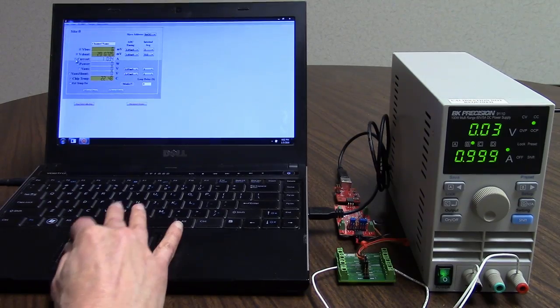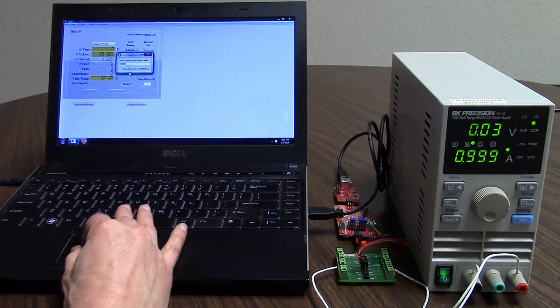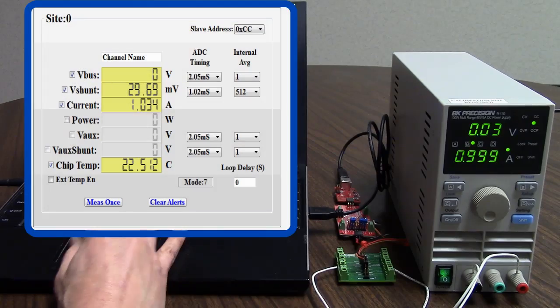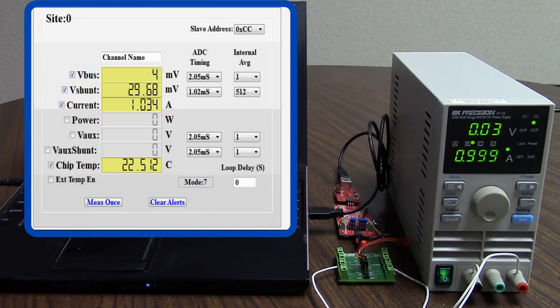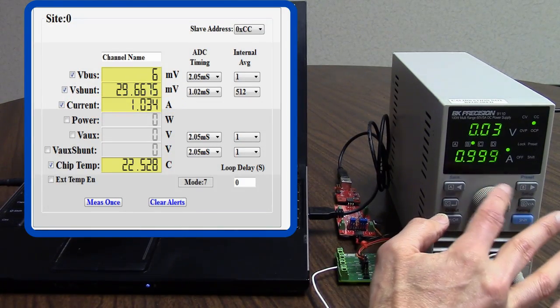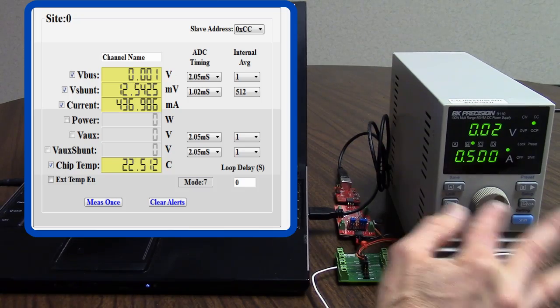We enter the equivalent shunt resistance of the sensor into the DPM interface software and it's measuring current. As we vary the current, the DPM tracks it pretty closely.